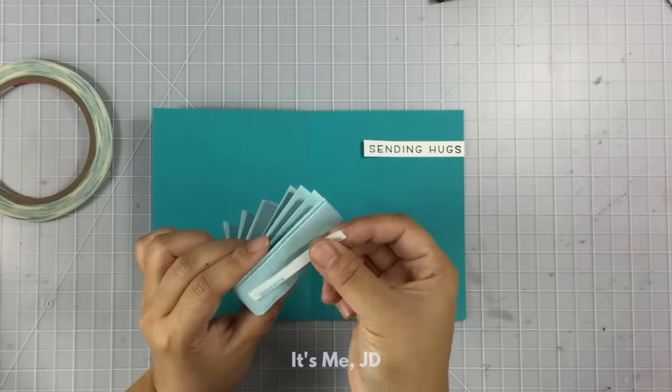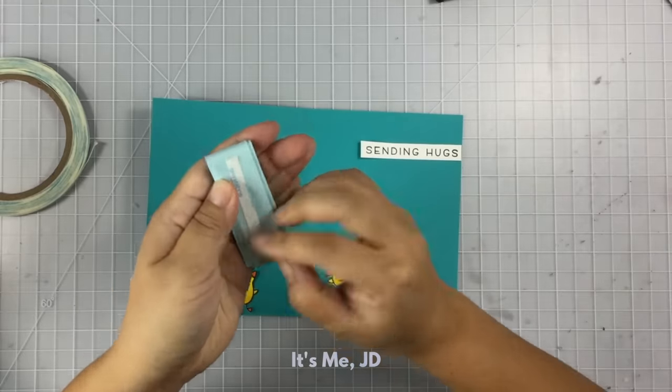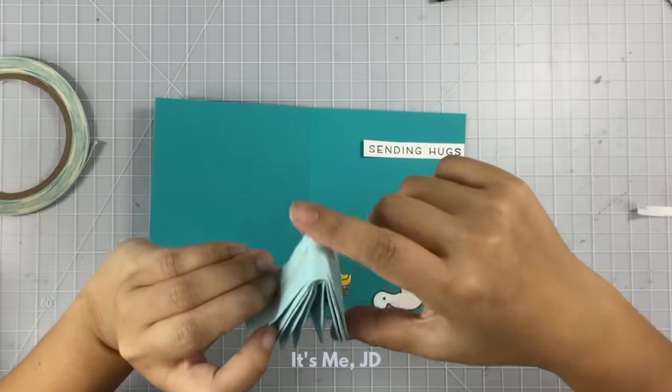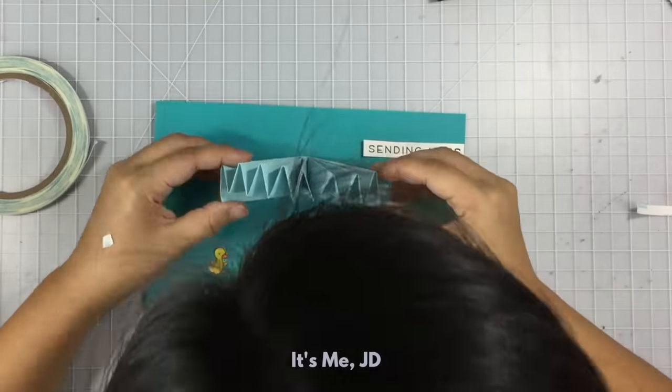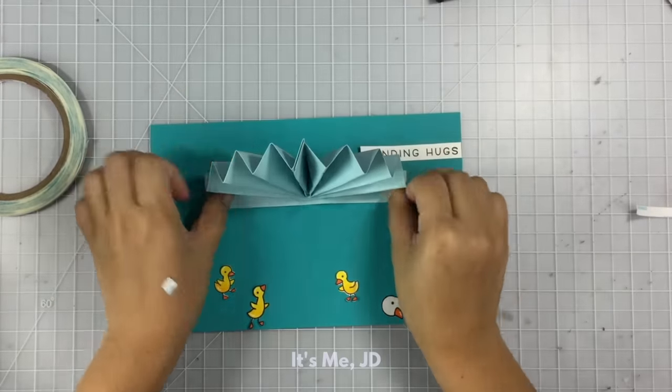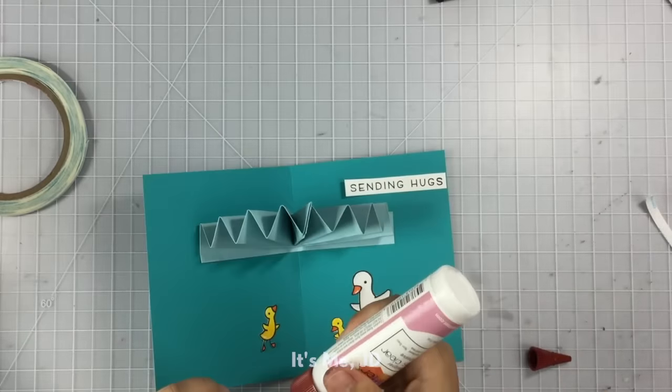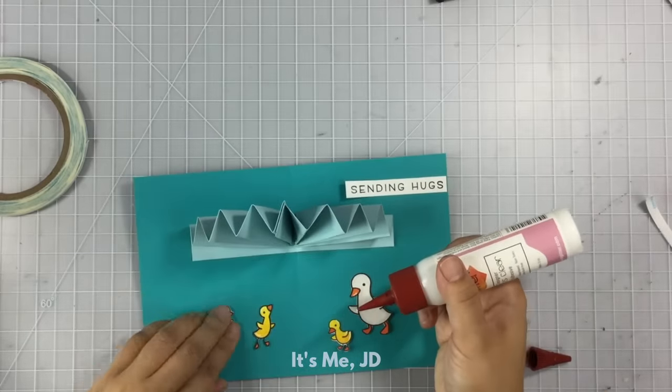I'm going to put some double-sided tape on the back of my fan element. Then I'll peel off the backing of both sides. And here's where I'll match up the score line of my fan element as well as the score line of my note card. I'll attach my duckies with some glue. My plan is to make the accordion fan a little umbrella for my duckies.